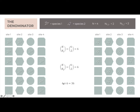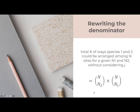Now let's move to the denominator. For both species 1 and 2, there are six different ways to arrange each species' occupied sites among the four total sites — equivalent to 4 choose 2, or N choose N1 and N choose N2. We need to consider every combination of species 1 and species 2 arrangements, giving 6 times 6 equals 36. So the denominator is N choose N2 times N choose N1.